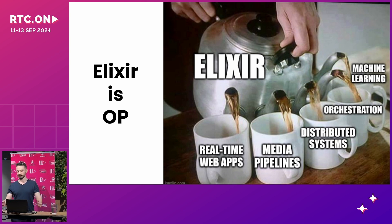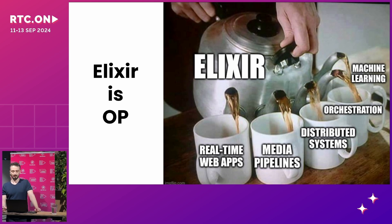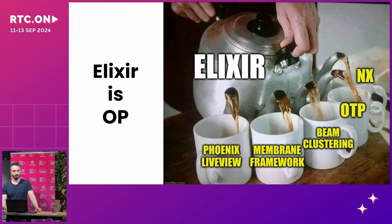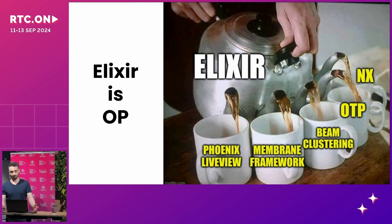Elixir was the easy choice because it can handle anything from real-time web apps to media pipelines, distributed systems, orchestration, and even machine learning. It allows you to do more with less and be very productive, because we have frameworks like Phoenix LiveView, Membrane Framework, BEAM clustering, OTP, and NX. All of these libraries and concepts make it very easy to build a large-scale application without a huge team.